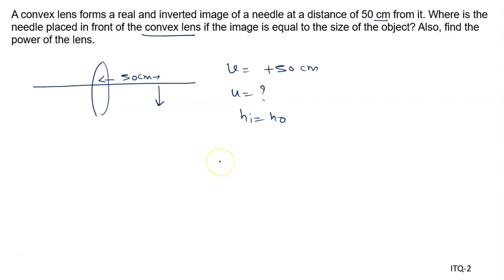Also find the power of the lens. We know height of the image and height of the object is equal when the object is placed at the 2f. When the object is at the 2f, image is also at the 2f.